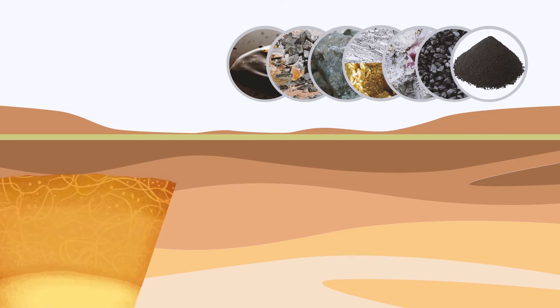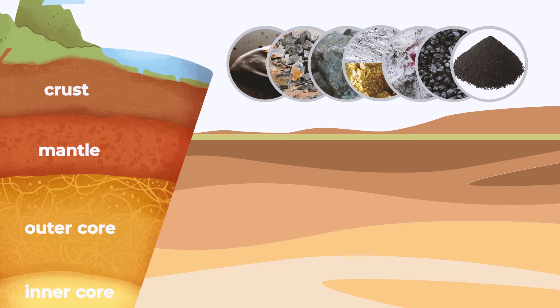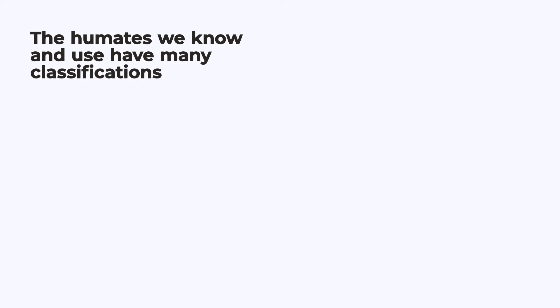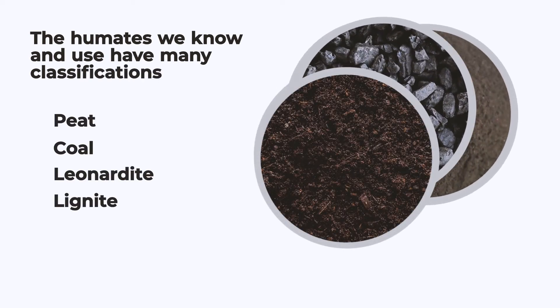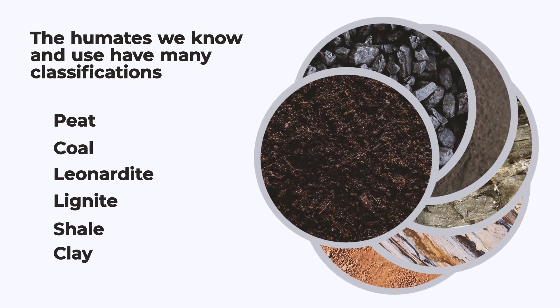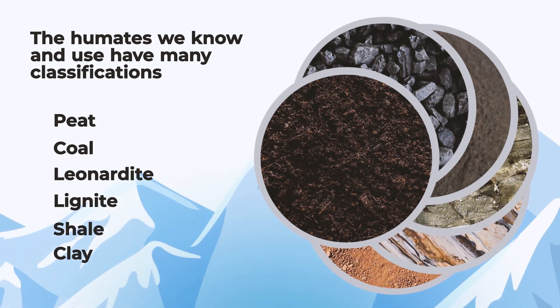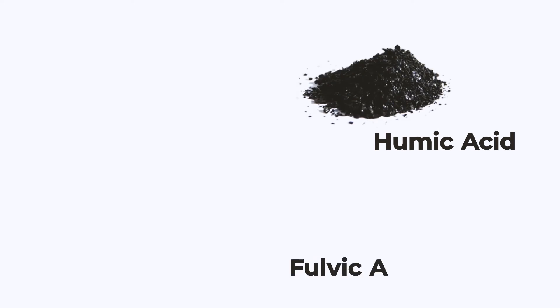Virtually any element or mineral we mine today was created millions of years ago during the formation of our Earth. The humates we know and use have many classifications, such as peat, coal, leonardite, lignite, some types of shale and clay deposits, as well as exudate from the Himalayan mountain range. These humate substances are all millions of years old. This is where humates like humic acid and fulvic acid come into play.